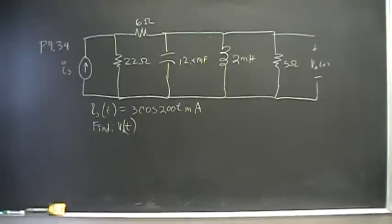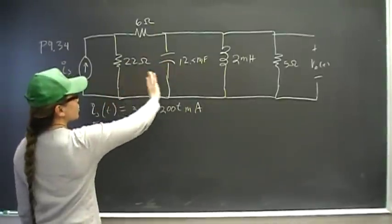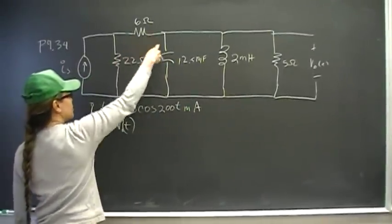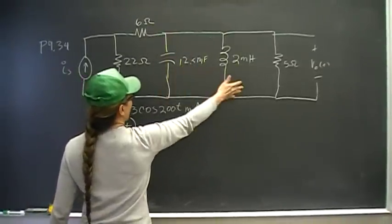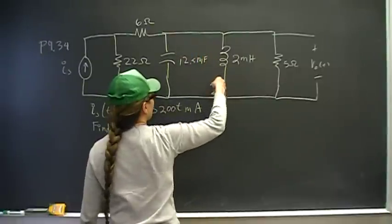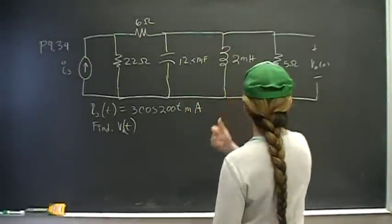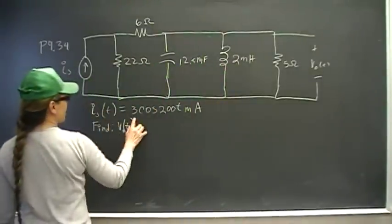Hi, you guys. So this is problem 34 from chapter 9. We have a current going through this circuit which has a 22 ohm resistor here, 6 ohm resistor here in parallel, in series with a parallel 12.5 millifarad capacitor, a 2 millihenry inductor, and a 5 ohm resistor. And we know that the current is 3 cosine 200t milliamps.